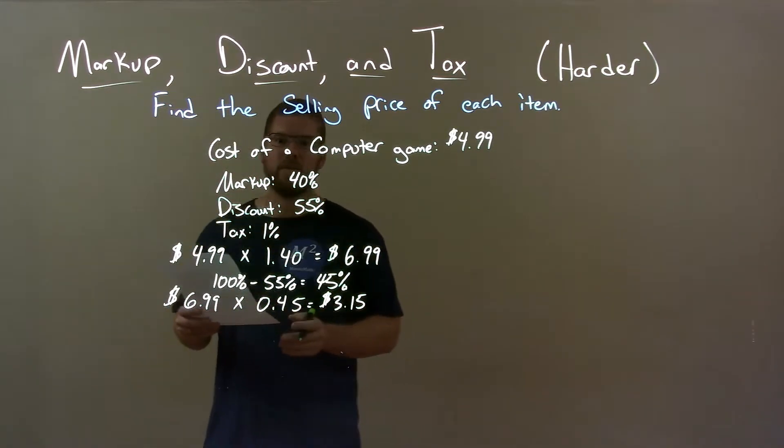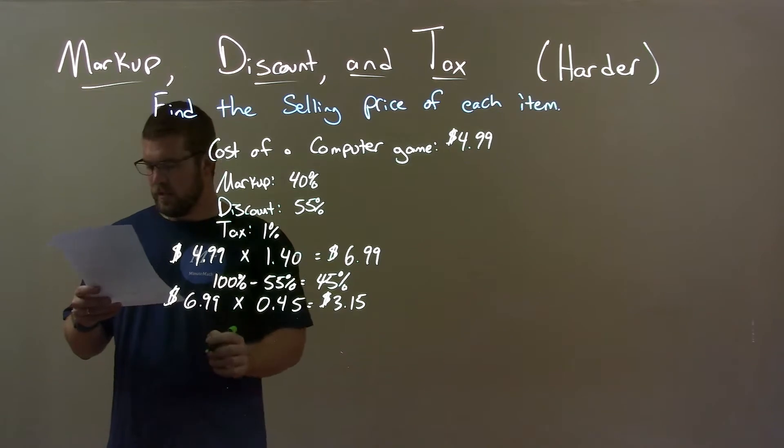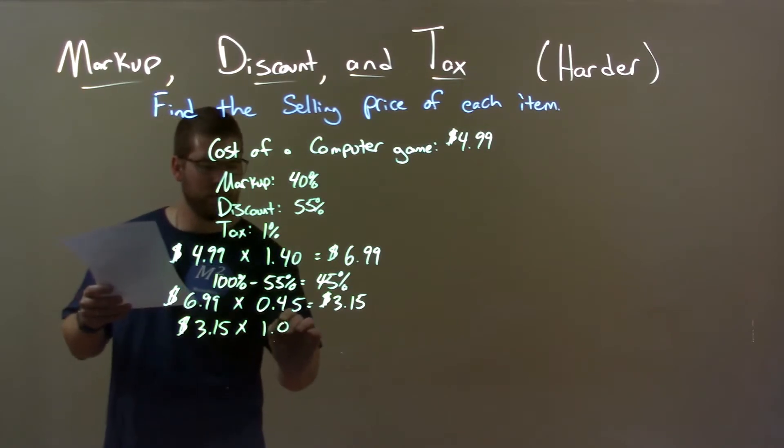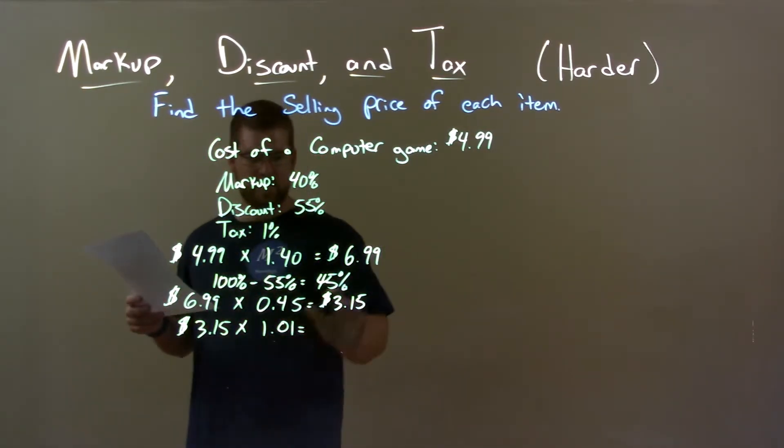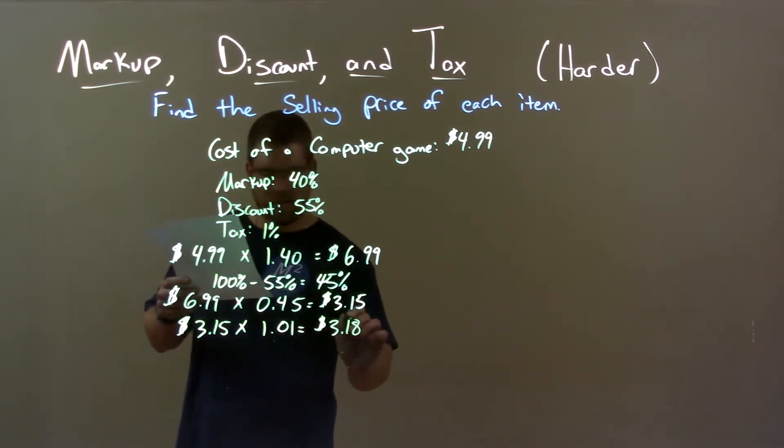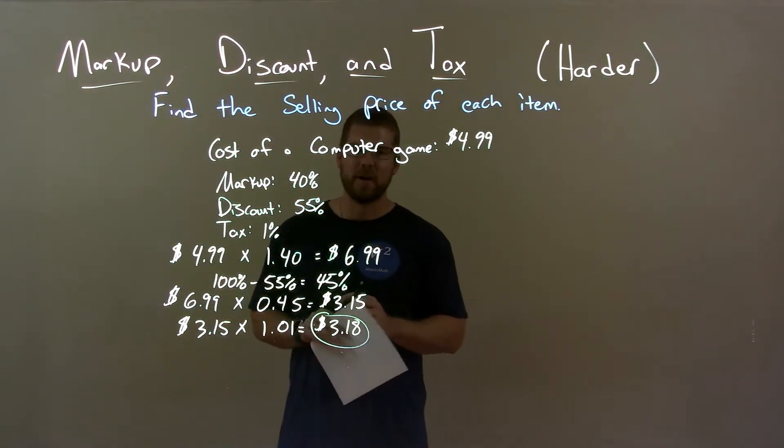But now, we've got to apply that 1% tax. Don't forget it. So, we take that $3.15 and multiply that by 1.01, which represents a 1% tax and encompasses the final cost there of $3.18. And so, there is our final selling price of the computer game.